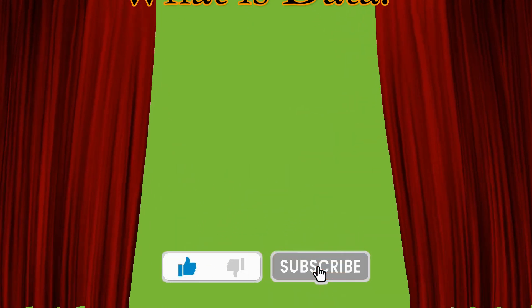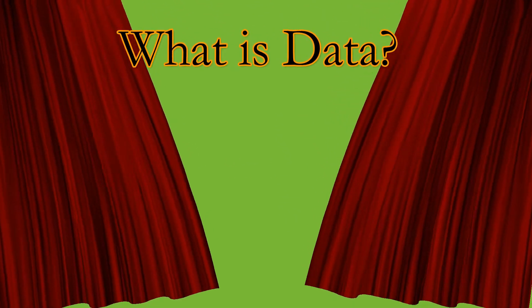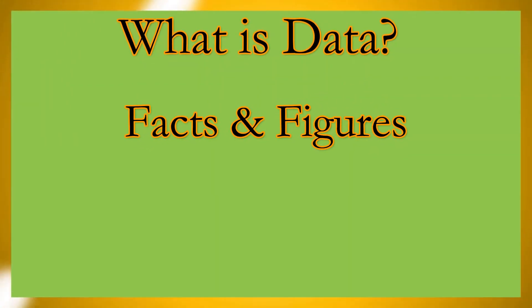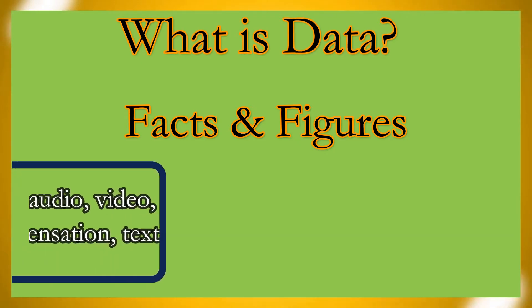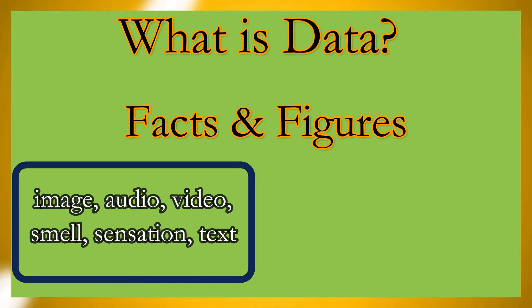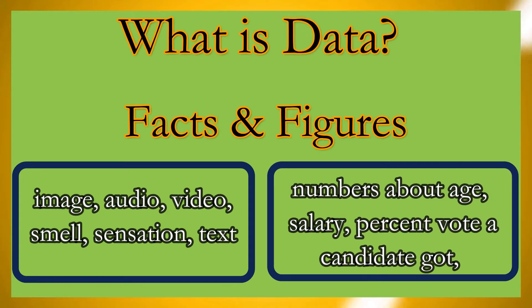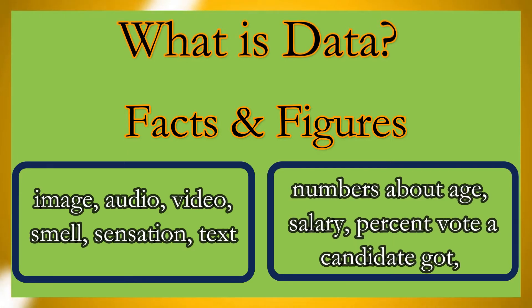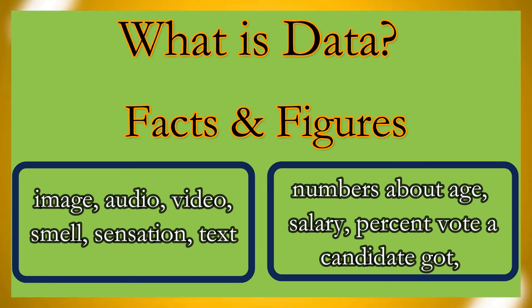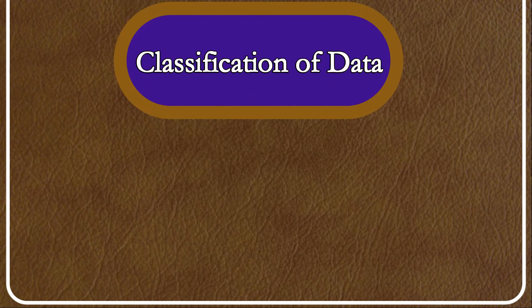What is data? Data means unorganized facts and figures. Facts refers to image, audio, video, smell, sensation, and text. While figures refer to numbers about age, salary, or the percent of votes a candidate got. The meaning of data, its types and sources get clarified by means of understanding its classification.